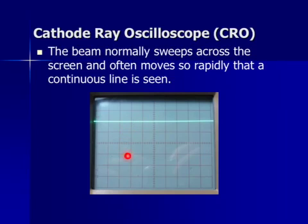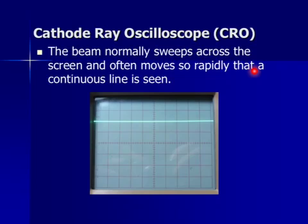Here is the screen of a CRO. The electron beam normally sweeps across the screen, and often moves so rapidly that a continuous line is seen. The electron beam is moving from left to right and back again at a very fast speed, such that the line appears continuous.